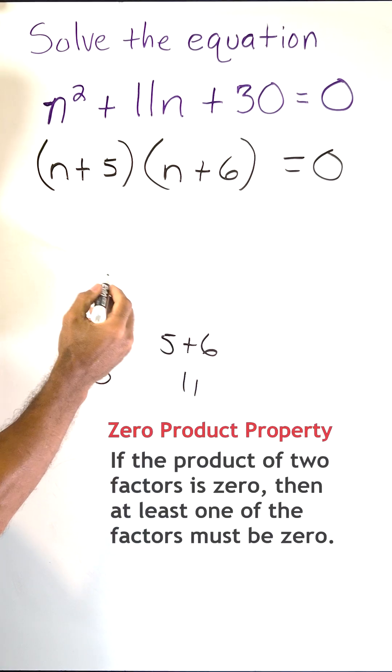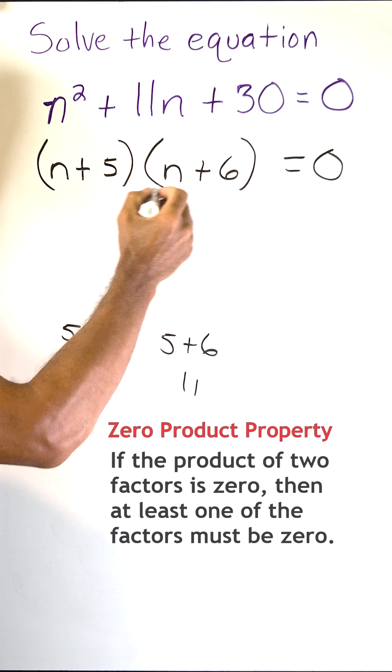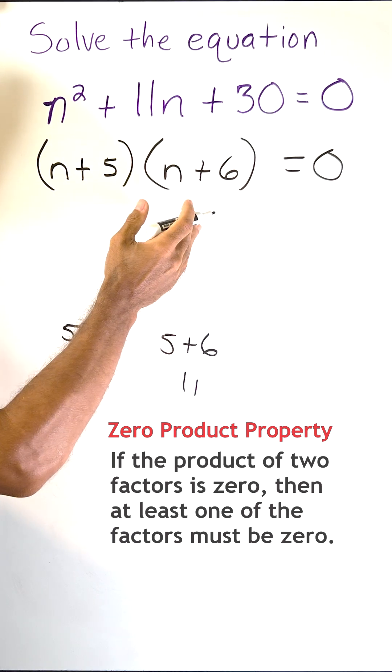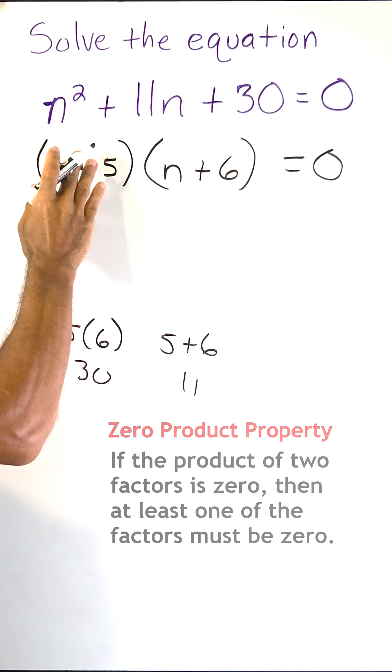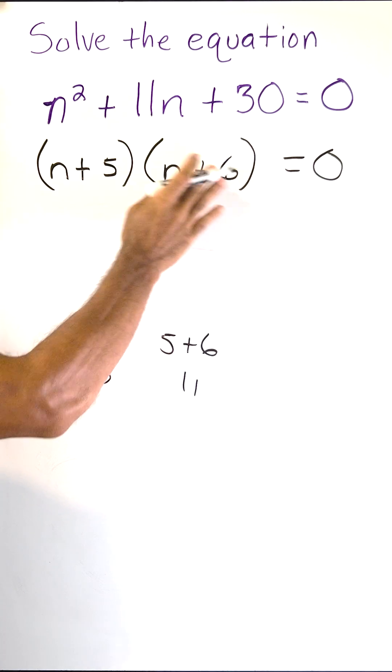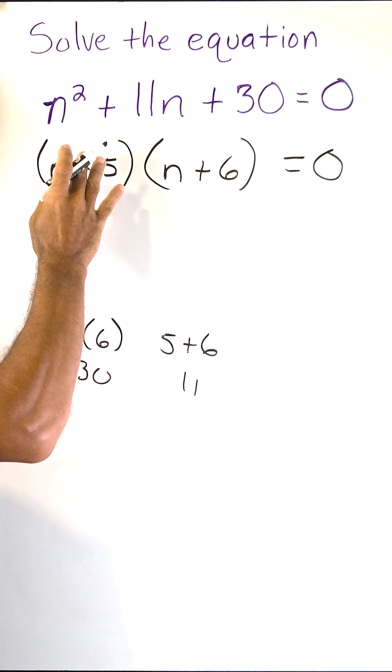According to the zero product rule, one of these two factors has to be equal to 0. So it wouldn't matter what this is, this would have to be 0. Or it wouldn't matter what this is, this would have to equal 0.